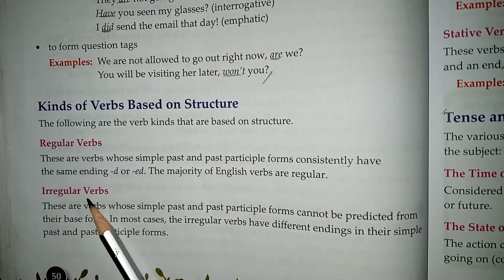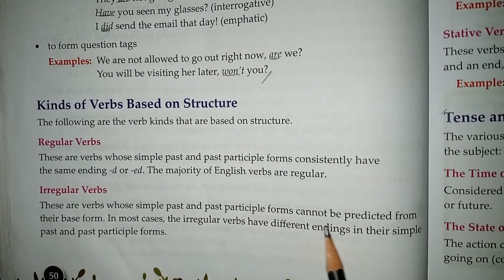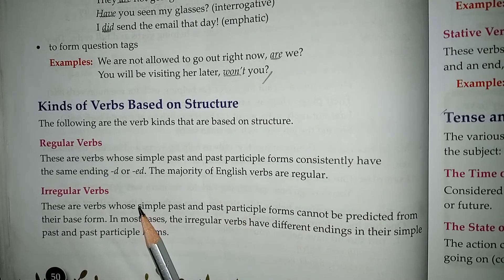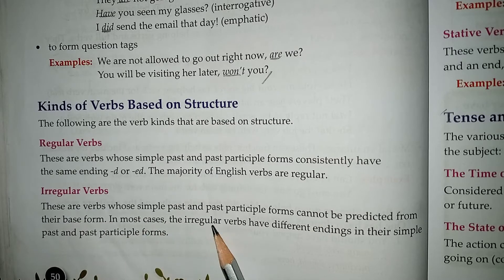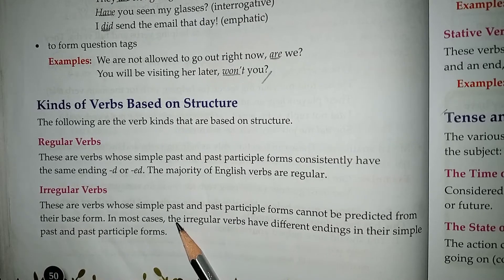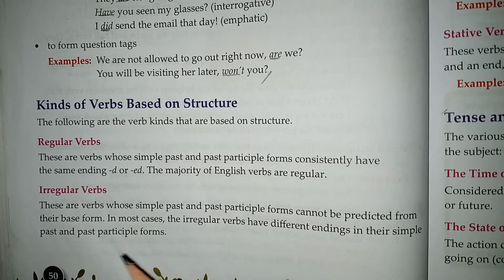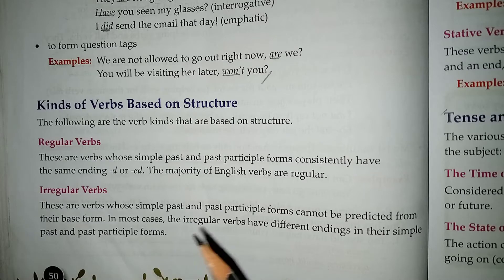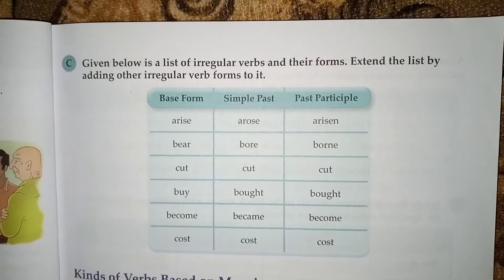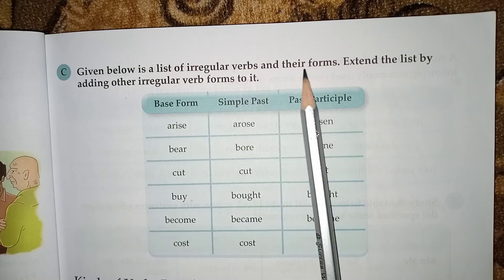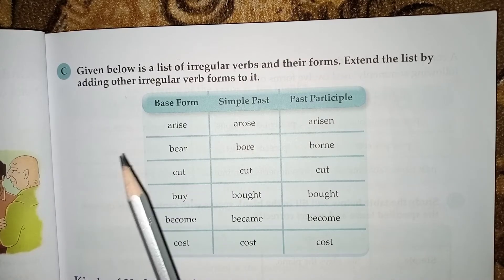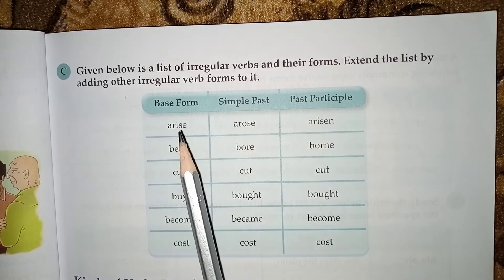The second kind is irregular verbs. These are verbs whose simple past and past participle forms cannot be predicted from their base form. In most cases, irregular verbs have different endings in their simple past and past participle forms. The simple past and past participle form is based on a change.